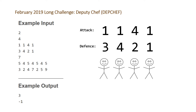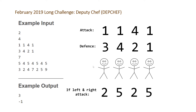This problem boils down to looping through and checking whether the defense of soldier i is greater than the combined attack of soldier i-1 and soldier i+1, and just returning the largest defense value that satisfies this. If there is no soldier whose defense is greater than the combined attacks of the person on the left and right, you return negative 1, which is the case for the second example.